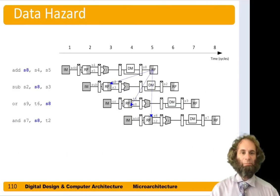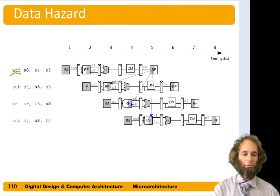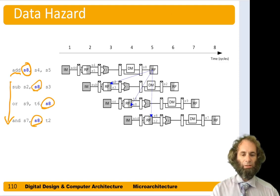Let's take a look at an example of a data hazard. Suppose we do an add: S4 plus S5 goes into S8, and then the next four instructions all use S8 as a source. The add is fetched in step 1, we read S4 and S5 in step 2, we perform the addition in step 3, we don't use the data memory in step 4, and in the first half of step 5 we write S8 back into the register file.